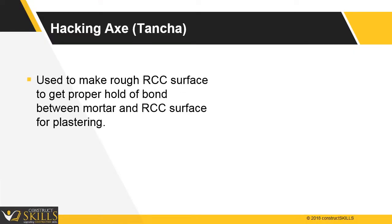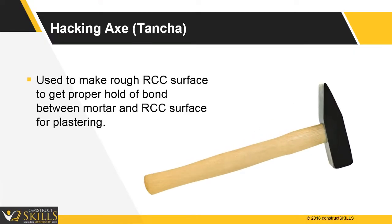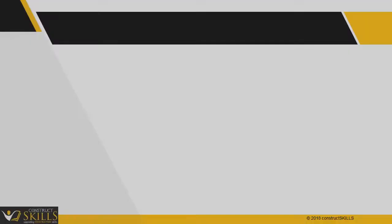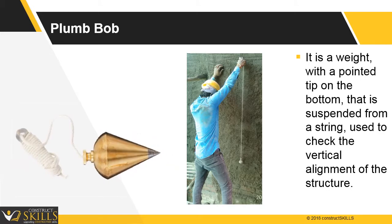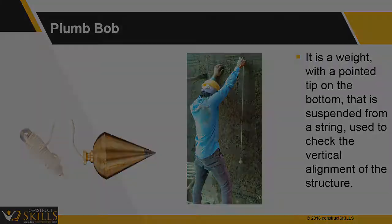Hacking axe: this tool is used to provide a rough surface on RCC members for plastering work. Plumb bob: it is a weight with a pointed tip on the bottom that is suspended from a string and is used to check the vertical alignment of the structure.